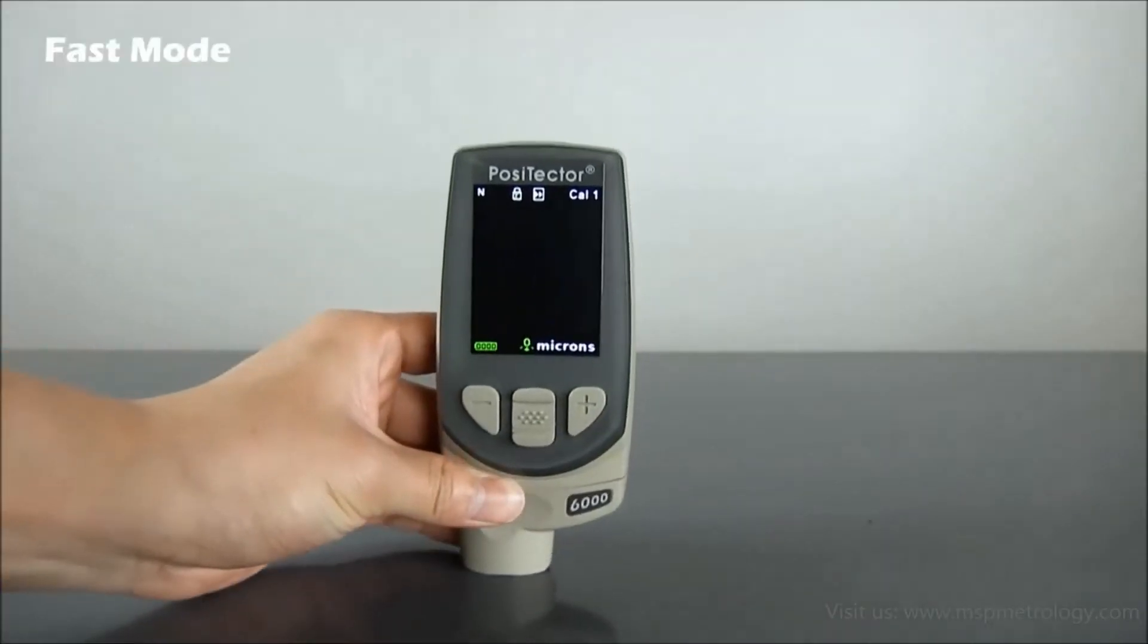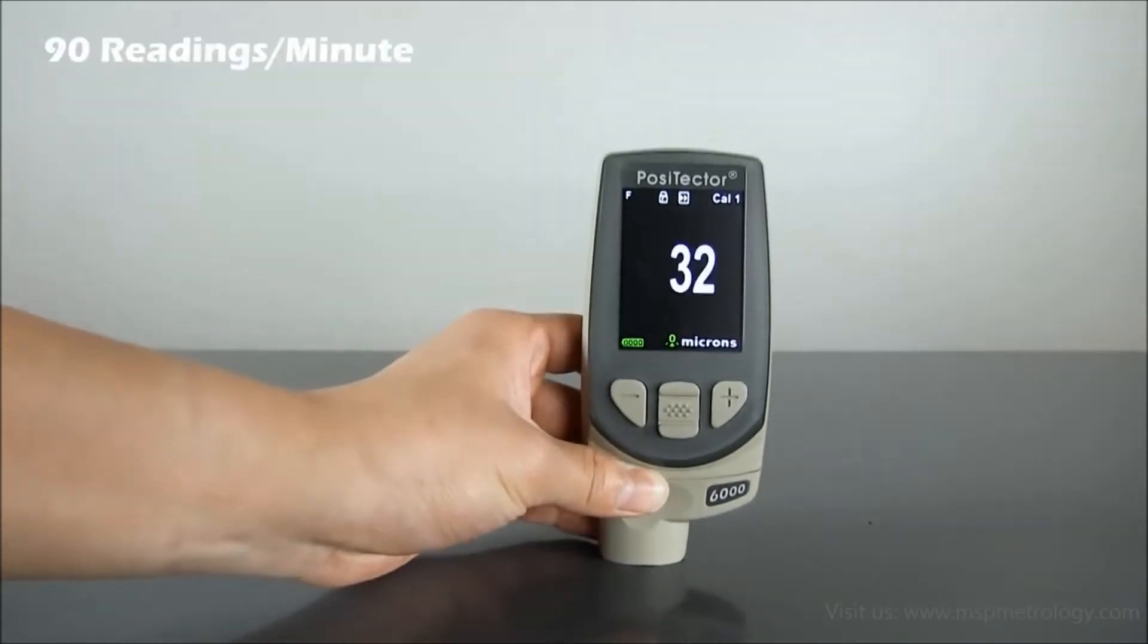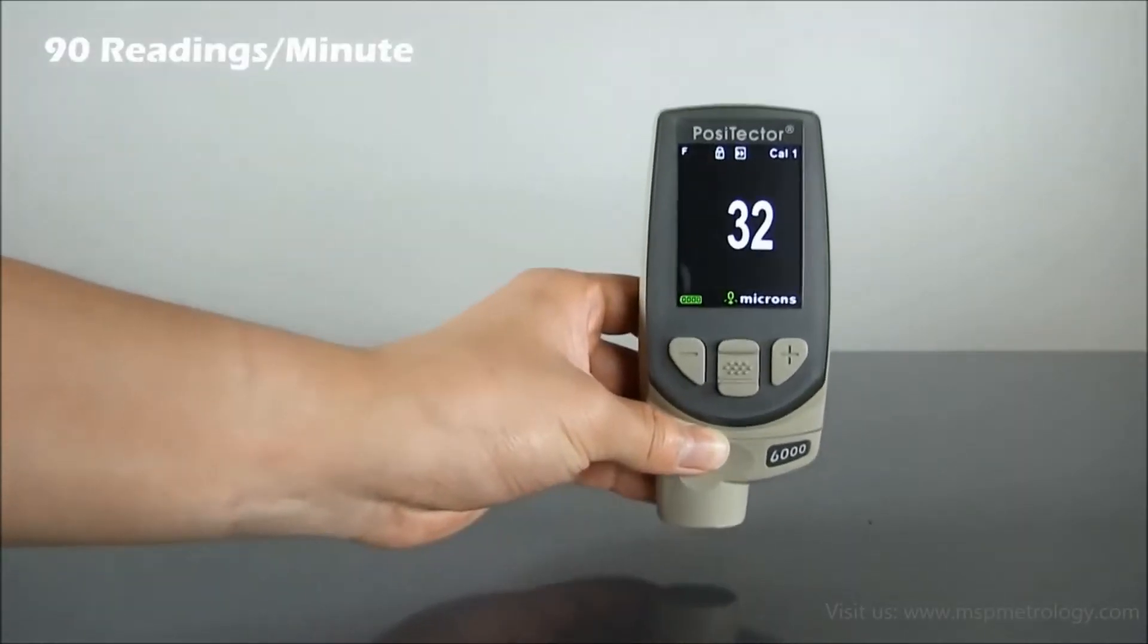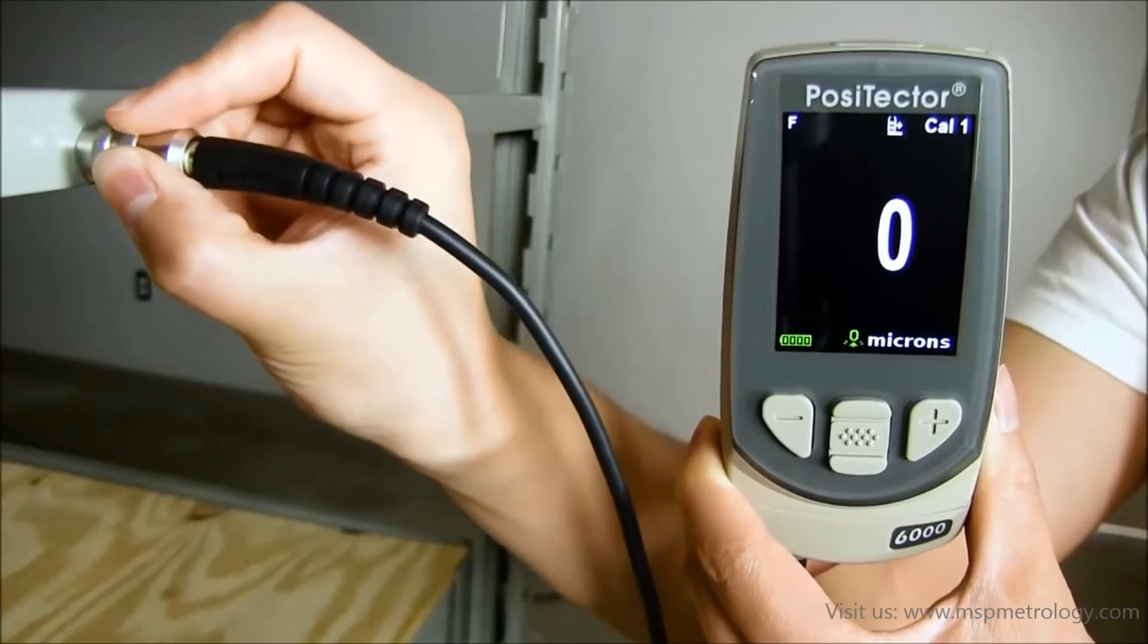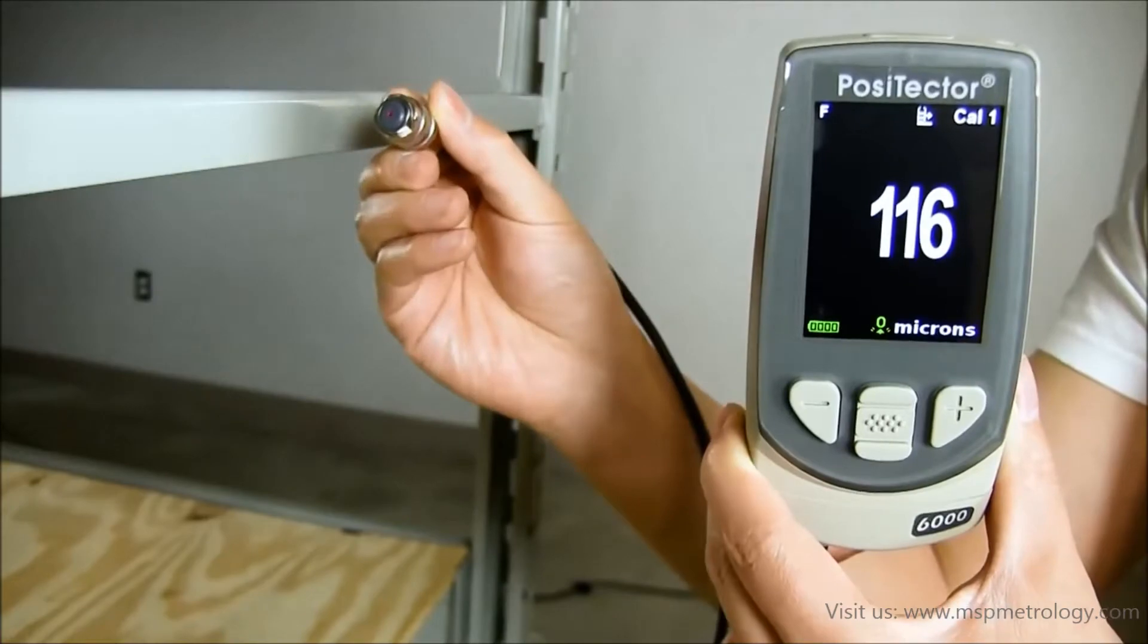For advanced users and straightforward applications, Fast Mode increases the measurement speed even further to over 90 readings per minute. To quickly analyze a large area, Scan Mode now takes over 180 readings per minute while the probe is held on the surface.